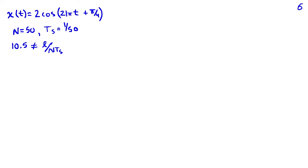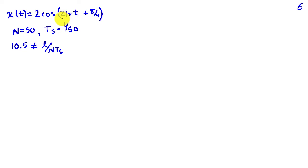We'll consider another example, very similar to the previous one, except instead of a frequency of 20π·t, we now have 21π·t, or 10.5 hertz. We again use N equals 50 and t-sub-s equal to 1 over 50. Note that 10.5 hertz is no longer an integer multiple of 1 over N·t-sub-s. The DFT is trying to express this sinusoid using complex sinusoids whose available frequencies don't correspond to 10.5, so instead of just two non-zero coefficients, we expect to see many non-zero coefficients.